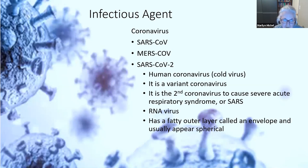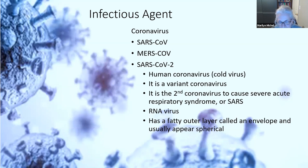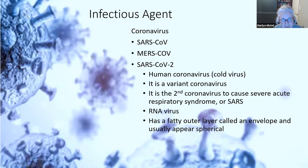SARS-CoV-2 is a human coronavirus — a variant of the coronavirus and the second to cause severe acute respiratory syndrome, or SARS. It's an RNA virus, and RNA viruses can be tricky; it doesn't take much for them to mutate. Influenza is also an RNA virus. This virus has a fatty outer layer called an envelope and is usually spherical. It's called a coronavirus because when you look at it, it resembles a crown with little knobs.